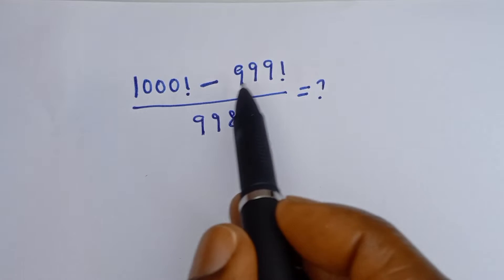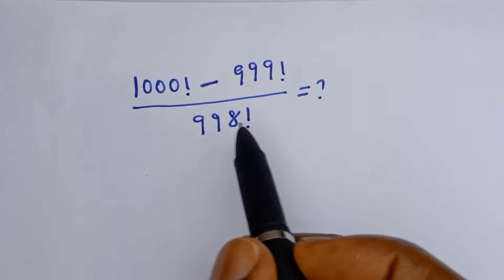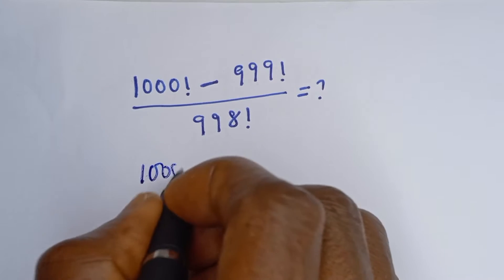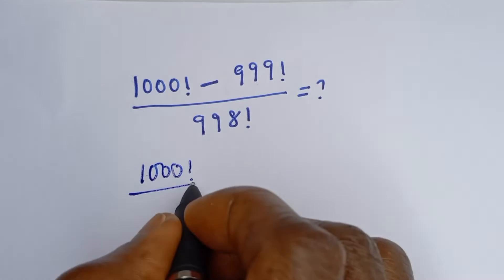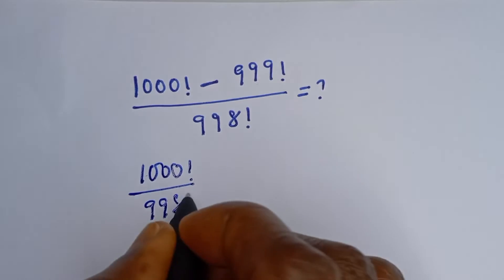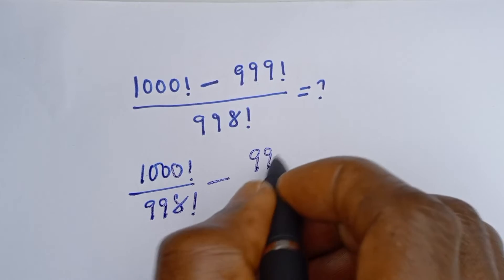1000 factorial minus 999 factorial divided by 998 factorial. Then this is 1000 factorial divided by 998 factorial minus 999 factorial divided by 998 factorial.